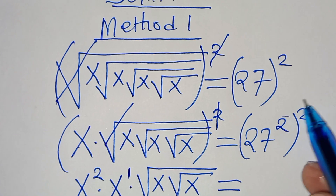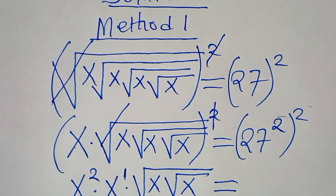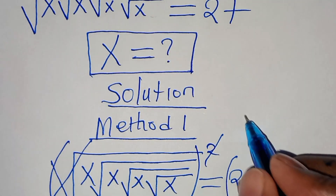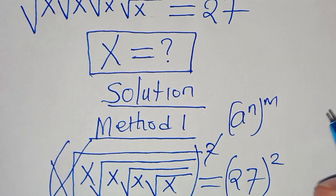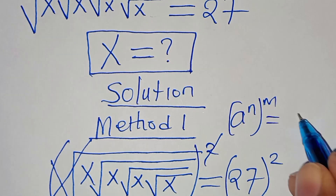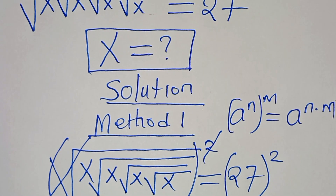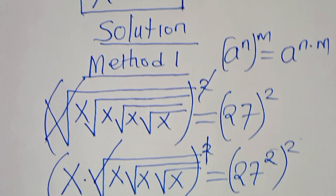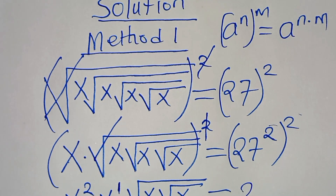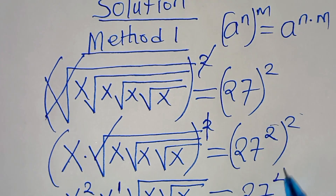We can express this using the exponent property: (a^n)^m = a^(n·m). Applying this property, we have 27 raised to the power of 2 times 2, which is 27 to the power of 4.